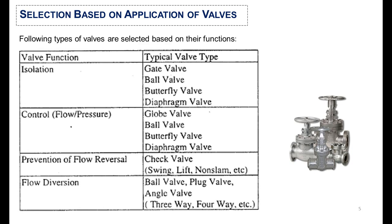The other criteria for valve selection is the function of the valve — for which purpose the valve is being installed. If the purpose is isolation or control of the process, then gate valve, ball valve, butterfly valve, and diaphragm valve can be used. But if there is a requirement for flow diversion from one direction to another, then three-way or four-way ball valve, plug valve, and angle valve will be selected.